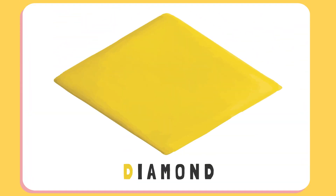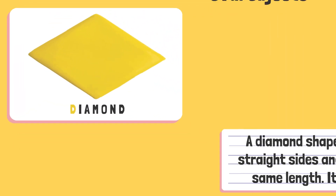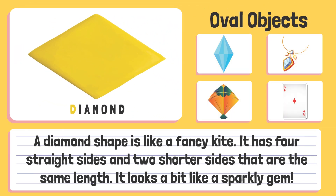Diamond. A diamond shape is like a fancy kite. It has four straight sides and two shorter sides that are the same length. It looks a bit like a sparkly gem.